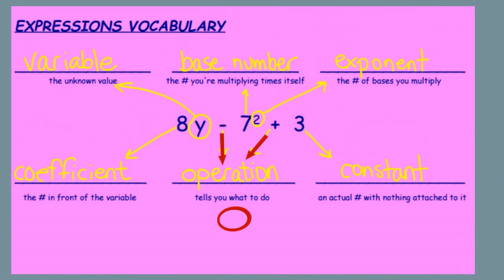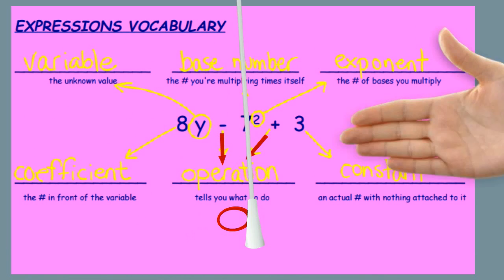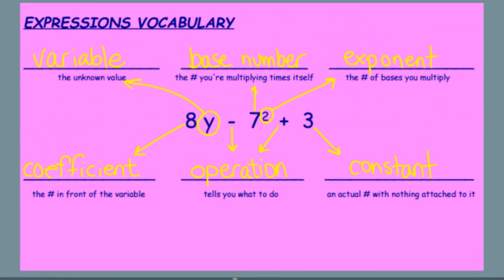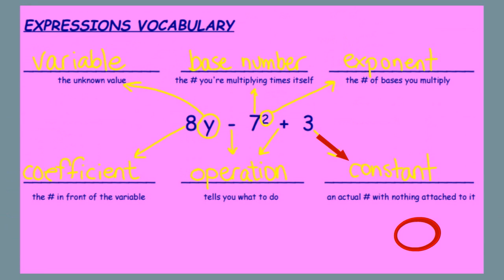The operation or operations tells you what to do. In this case you subtract and add. And the constant is an actual number with nothing attached to it. I hope this helps with the basic vocabulary of an algebraic expression.